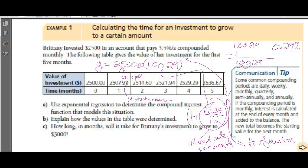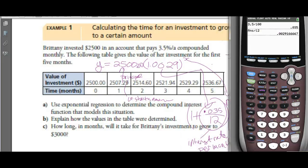We got 1.0029 — that's growth — so subtract 1 to get 0.0029. That's a decimal; multiply by 100 to get 0.29%. Multiply that by 12, you get 3.5%. So 0.0029 times 12 gives 0.035; multiply by 100 gives our 3.5%.